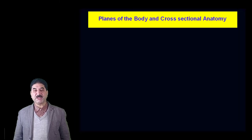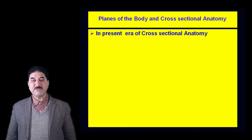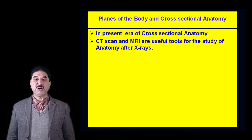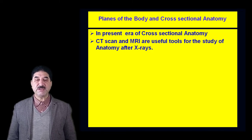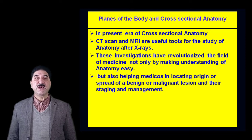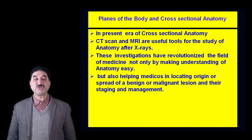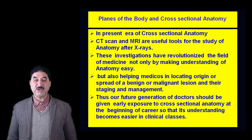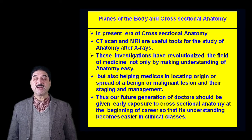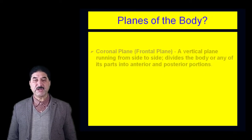What are the various planes of the body and what is their importance in cross-sectional anatomy? In the present era of cross-sectional anatomy, CT scan and MRI are useful tools for the study of anatomy. After X-ray, these investigations have revolutionized the field of medicine, not only by making understanding of anatomy easy but also helping in locating the origin or spread of a benign or malignant lesion and their staging and management. Future generations of doctors should be given early exposure to cross-sectional anatomy.